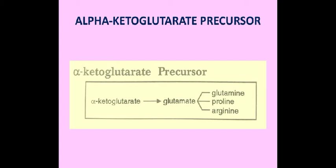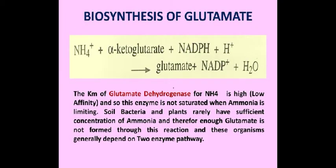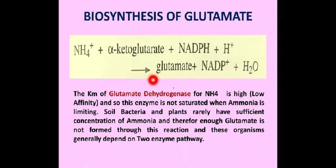Similarly, glutamine is the amino donor in many biological reactions. We will first study the biosynthesis of glutamate. Glutamate is synthesized from alpha-ketoglutarate and ammonium by the action of the enzyme glutamate dehydrogenase.